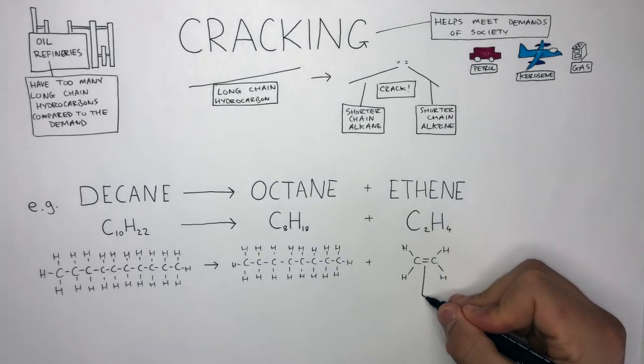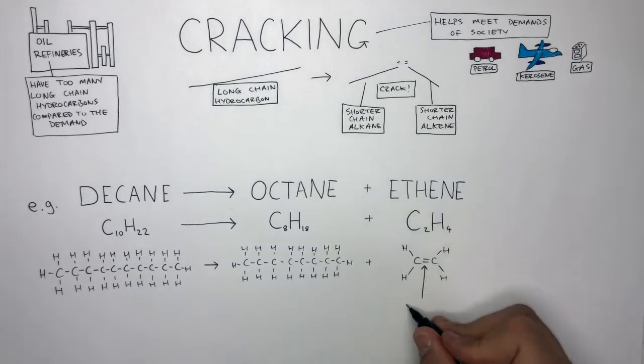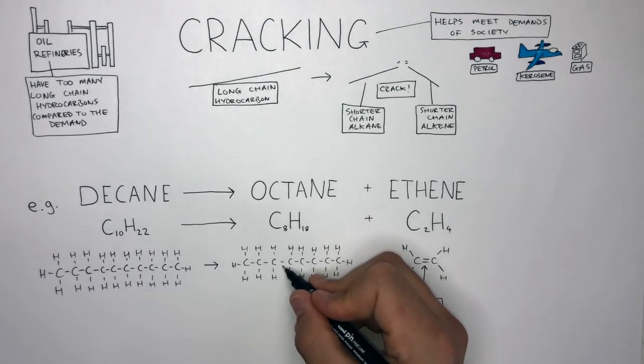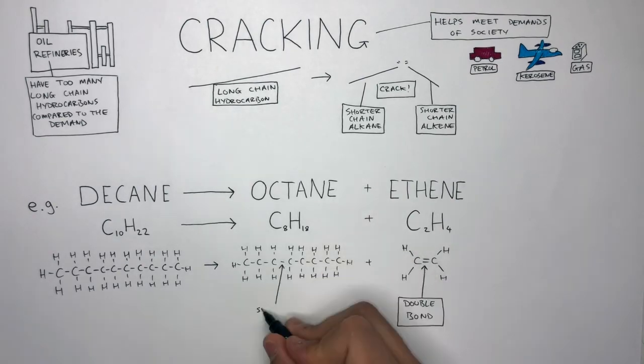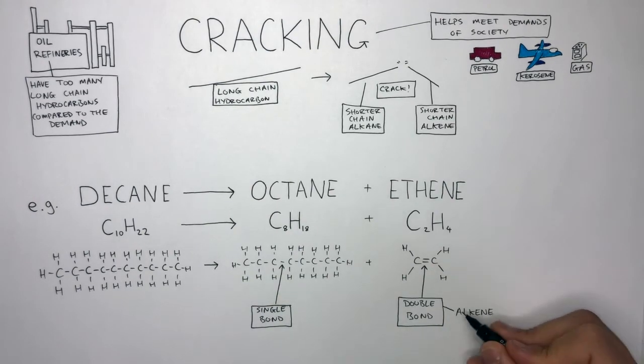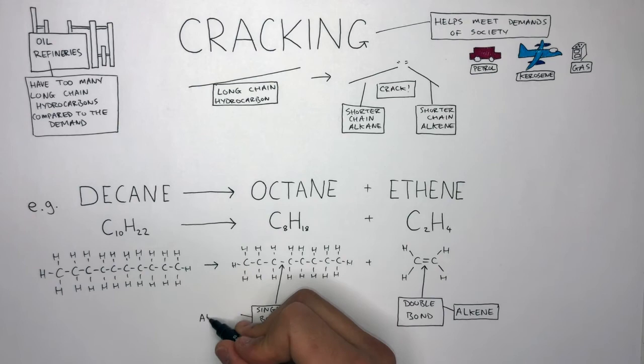Ethene contains a double bond because it's an alkene and all alkenes have double bonds, whereas octane is an alkane, so it has just single bonds. Double bonds are found in alkenes, whereas single bonds are found in alkanes.